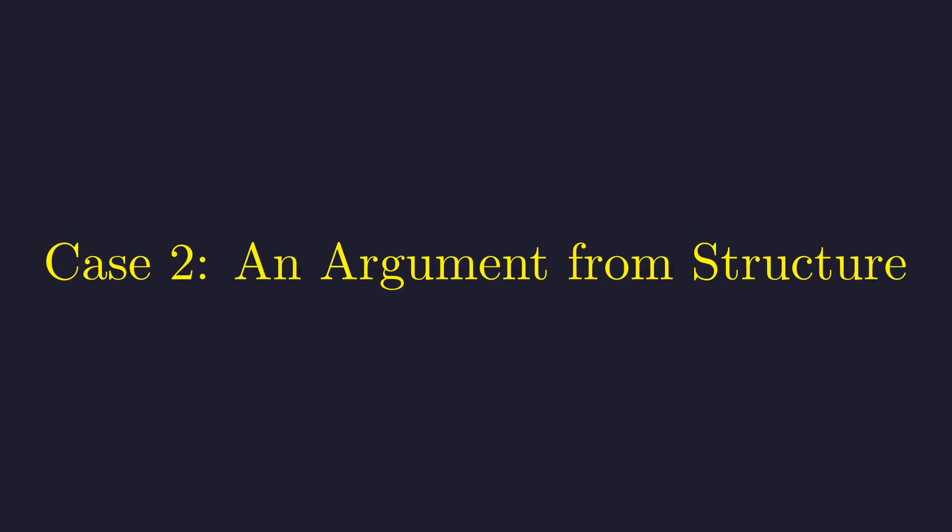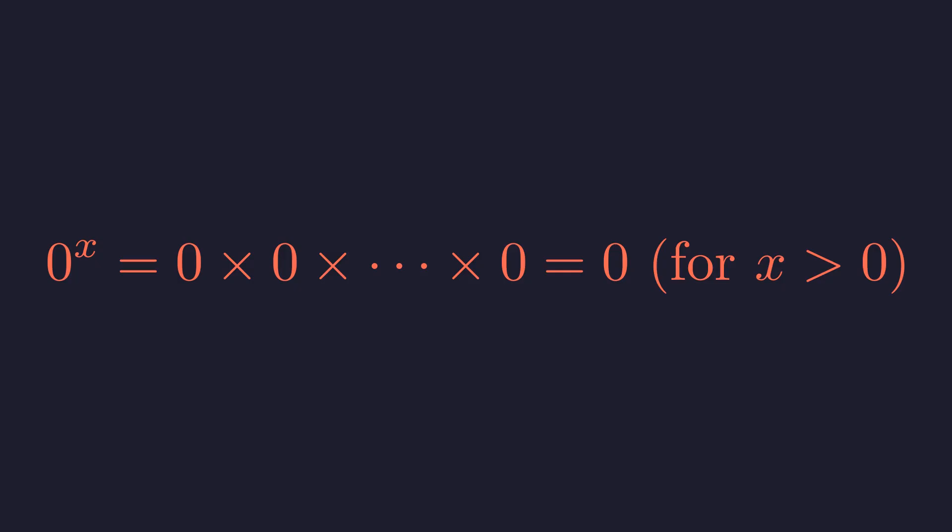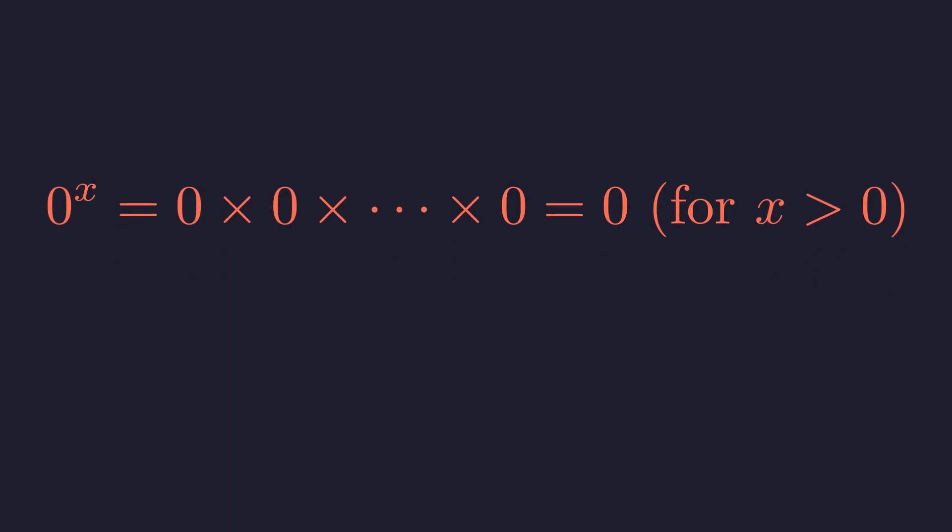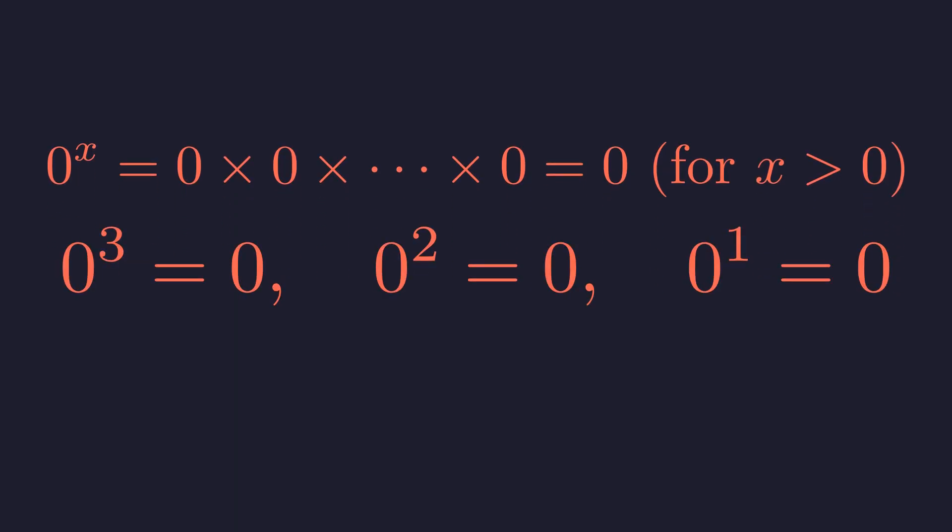However, an equally fundamental rule points to a completely different answer. Zero raised to any positive power means multiplying zero by itself, which always results in zero. For example, zero cubed is zero, zero squared is zero, and zero to the power of one is zero.